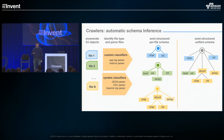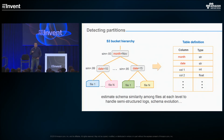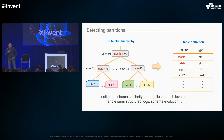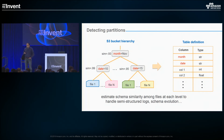You can see there are custom classifiers you can add — maybe you have an application that emits logs or a metrics parser. There are also a bunch of system classifiers: JSON, CSV, Apache, and various other stacks you might be familiar with. We also detect partitions. If you have an S3 bucket hierarchy with one level partitioned by month and then by date within the month with a bunch of files there, when you generate the table, the directory structure is actually data. You want the month extracted into a column, the date extracted into a column, and then the file structures that don't contain month or date also extracted into columns. We estimate schema similarity amongst the files to handle semi-structured logs and schema evolution.